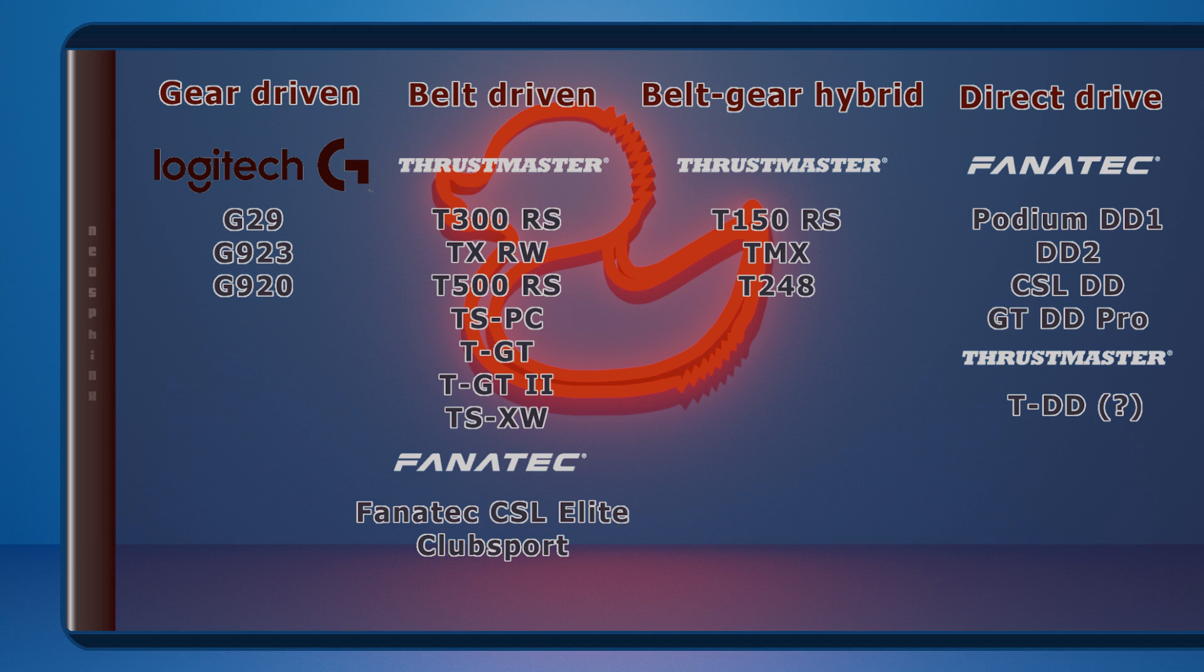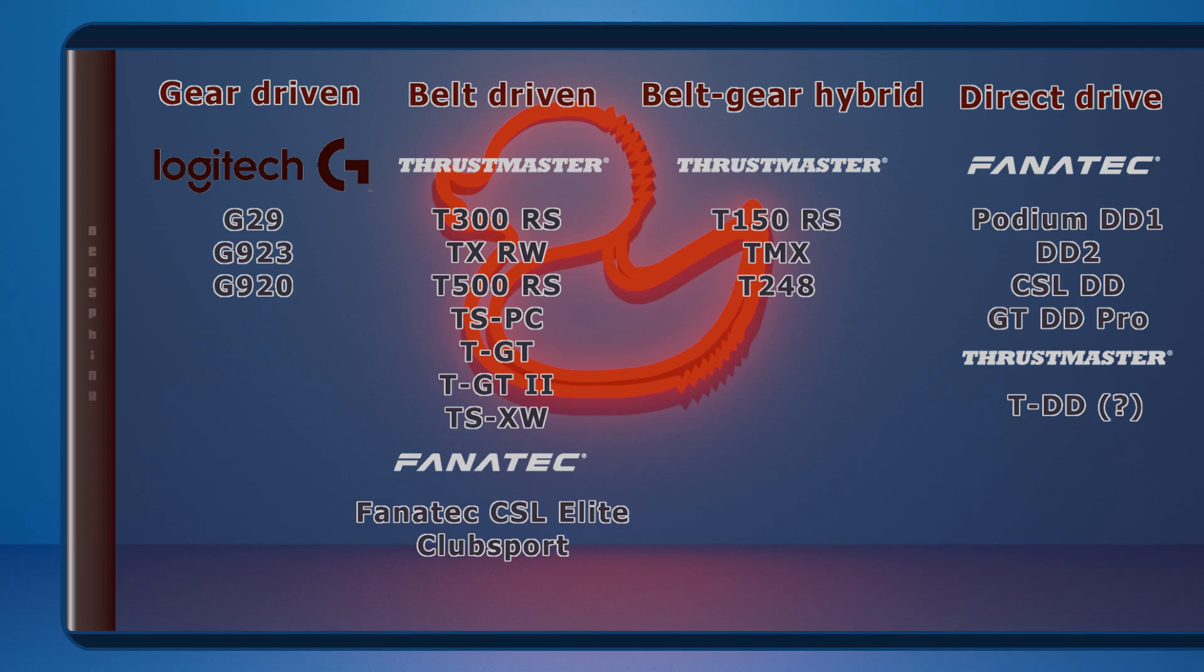We have belt driven like Thrustmaster T300RS, TX RW, T500RS, TS PC, TGT, TGT2, TS XW, and Fanatec CSL Elite and ClubSport V2.5. And then we have the direct drive systems like the Fanatec Podium DD1, DD2, GT DD Pro, and soon perhaps a Thrustmaster TDD.